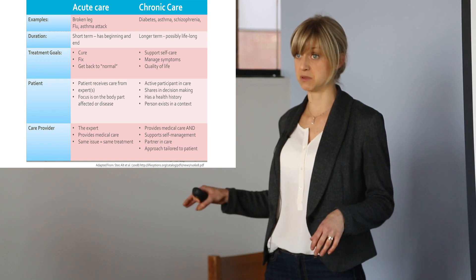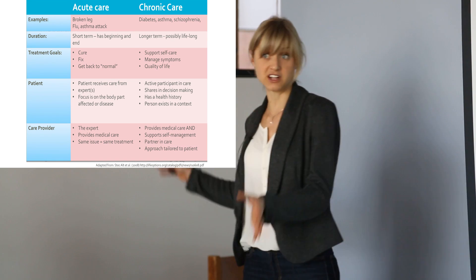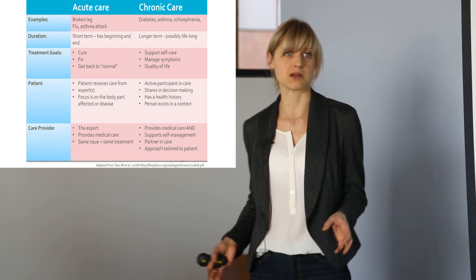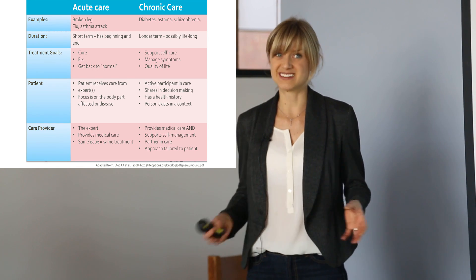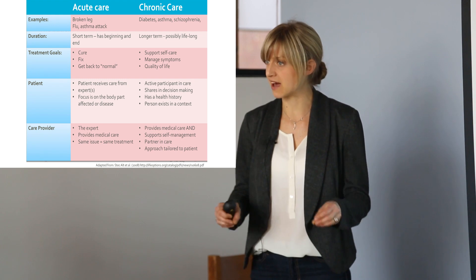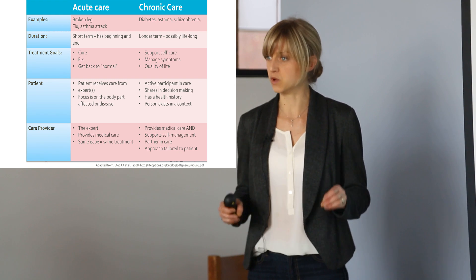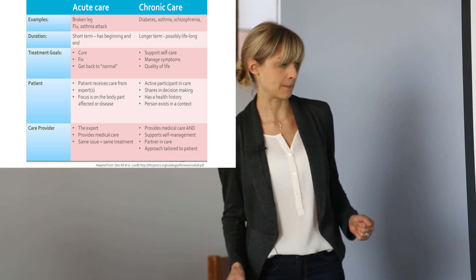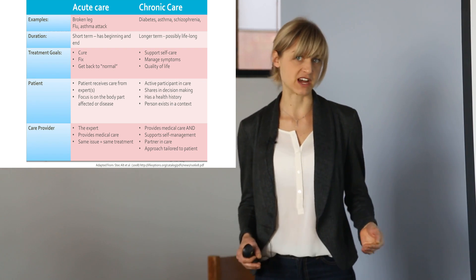Each patient will have slightly different needs even with the same chronic disease. Someone who has diabetes living in a very different situation than someone else with diabetes might need a different type of treatment — which doesn't usually work that way with acute care, where everyone who has tuberculosis will generally get the same treatment plan.